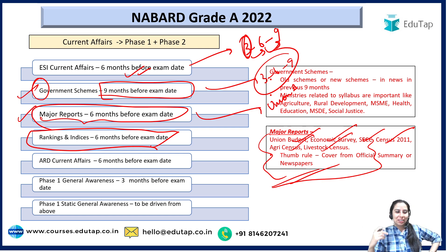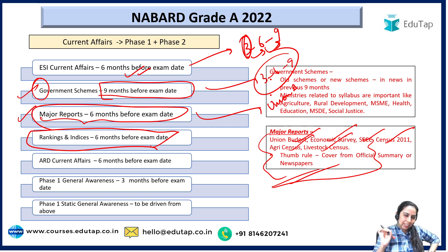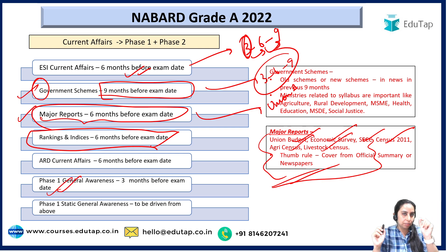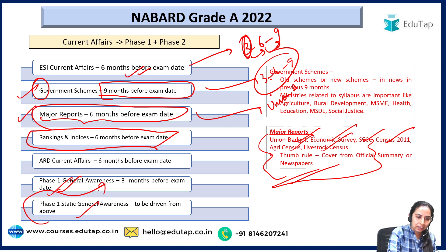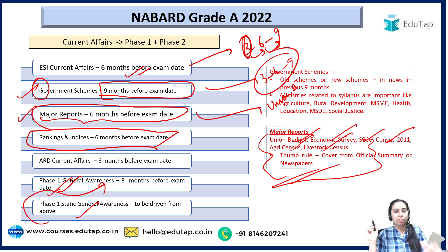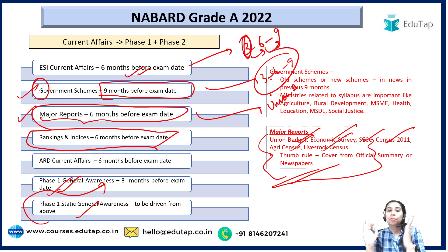Then comes Phase 1 General Awareness. Cover it from exactly 3 months before the examination until 1 week before — it is 20 marks and very important. For Phase 1 static GA, this should be driven from your current affairs only, so static GA is a part of current affairs when you cover it. That is what I had to tell you about current affairs.